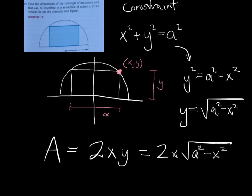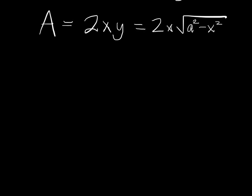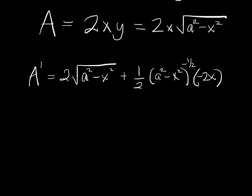Now, when we're taking the derivative of the area, we've got to remember this guy right here. This is just a number. Okay, so A prime is 2 root A squared minus x squared plus 1 half A squared minus x squared to the minus 1 half times minus 2x from the chain rule times 2x from the product rule.